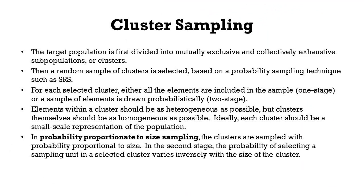For each selected cluster, either all the elements are included in the sample or a sample of elements is drawn probabilistically. Elements within a cluster should be as heterogeneous as possible — meaning they should be as different as possible — but the clusters themselves should be homogeneous. Ideally, each cluster should be a small-scale representation of the population, so it should resemble the population.